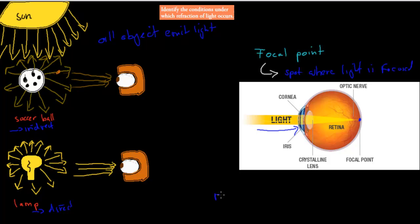Bending the light we call refraction. Refraction is, more or less, the bending of light, and that happens in our eye to make sure we hit that one spot. To summarize: all objects more or less emit light, either indirectly by reflecting the sun's rays, or directly by producing their own light. But that light still has to be able to actually focus on one spot in our eyes — light comes in, it has to be focused on one spot, and that happens in the eye itself.